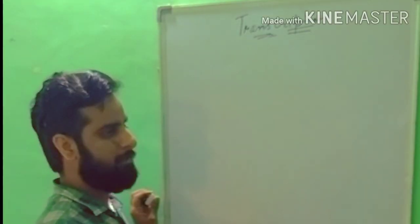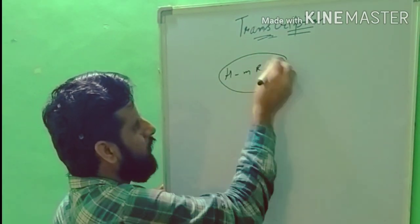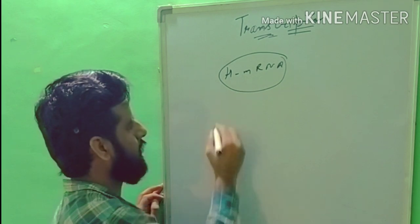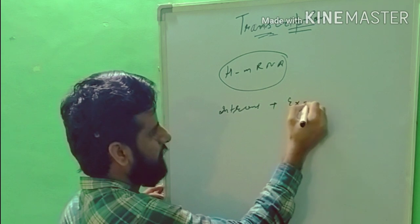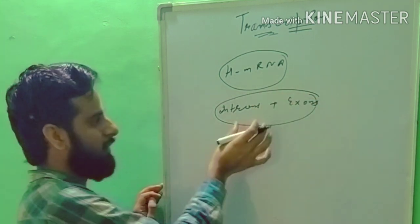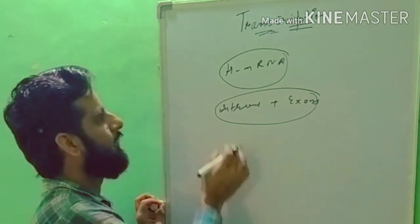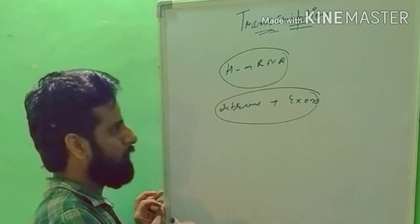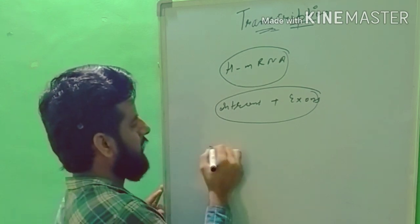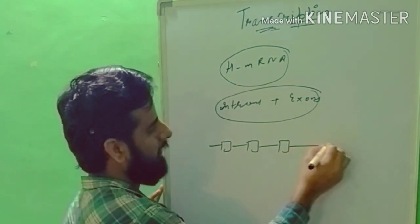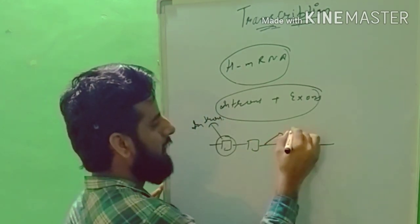At the end of transcription, we get heterogeneous mRNA, which is present along with exons and introns. The introns are blank spaces — they contain no information — but the exons are present and carry the coding information. This heterogeneous mRNA needs to be further modified through splicing and tailoring.